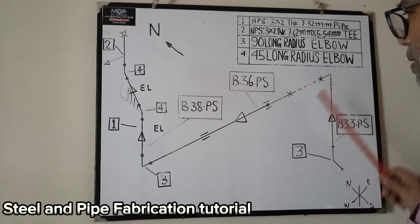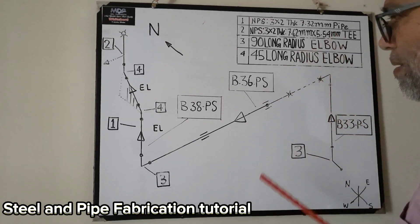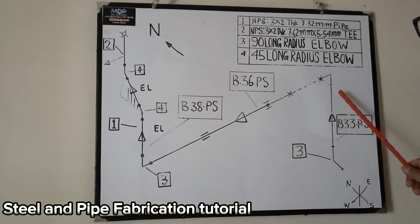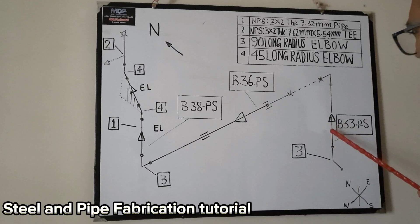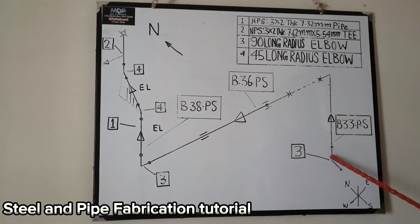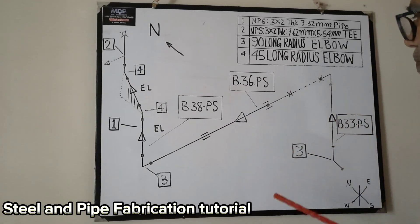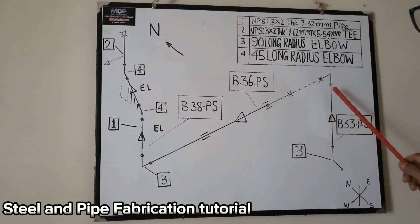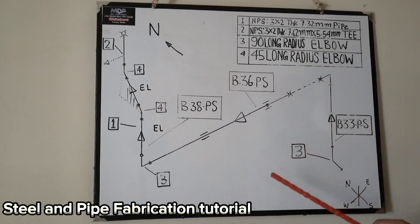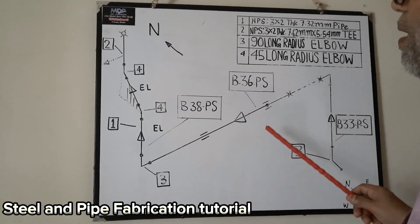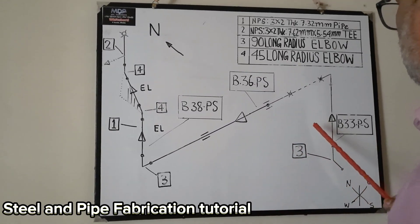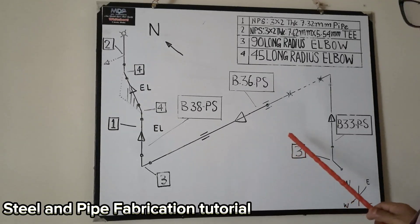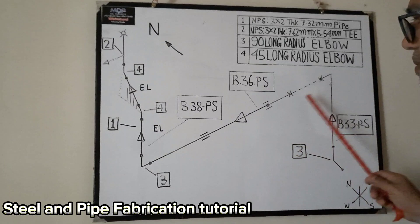How we read the drawing and how we recognize the materials — for example, this is a pipeline. We need to know how many thickness of pipe we use for this fabrication, how many diameter pipe we use, how many spools are here for erection, how many elbows, and what is the material we use. If you know how to read the drawing, we can easily fabricate this pipe.